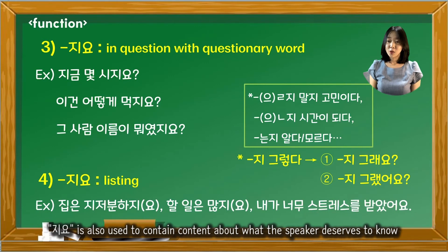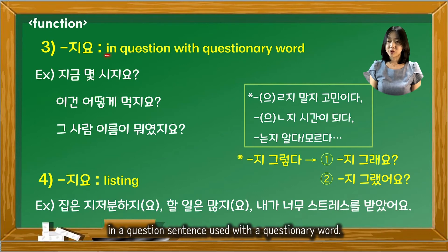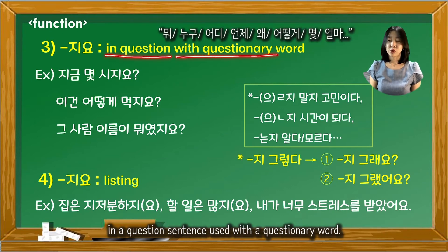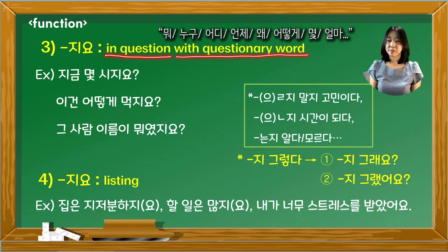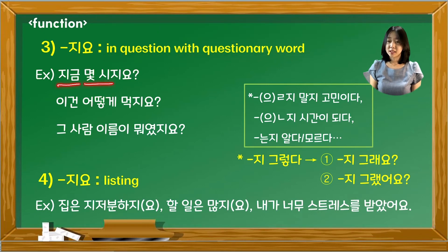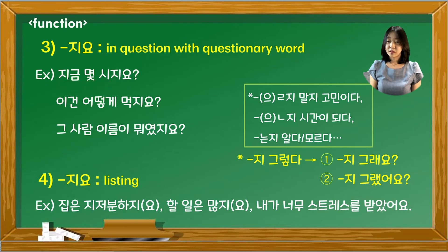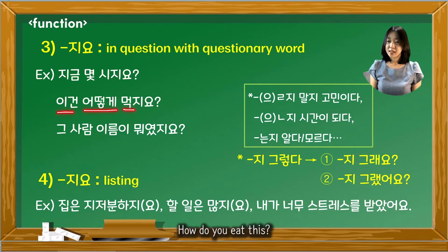지요 is also used in question sentences with a question word, when the content is something the speaker already deserves to know. For example: 지금 몇 시지요? — What time is it now? 이건 어떻게 먹지요? — How do you eat this?